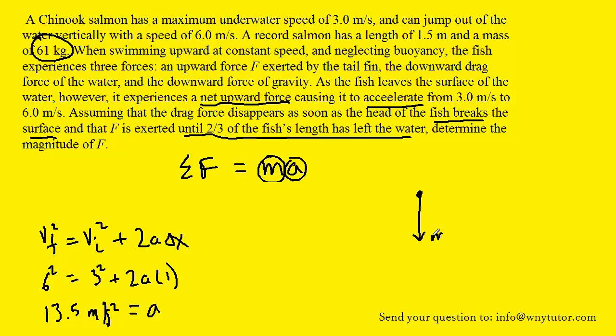Now of course there's the downward force of gravity. There is the upward force F that's exerted by the tail fin, so there should be an upward force pointing up. And maybe what was a little confusing is that it said that there was a downward drag, but then later in the question it says assume that the drag force disappears as soon as the fish's head breaks the surface. So I really think that the key to the problem was to ignore the drag force. Just as the fish's head begins to break, they're saying that the drag force disappears, so we can neglect it. So these are really the only two forces.